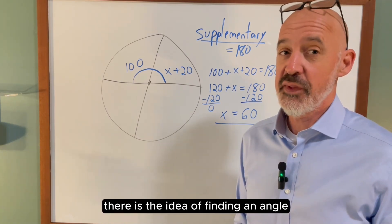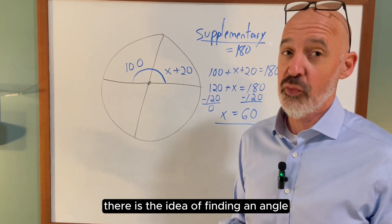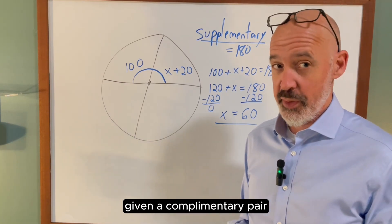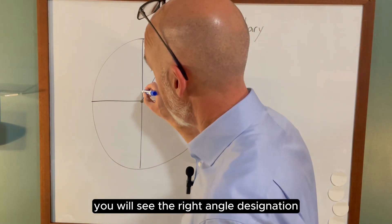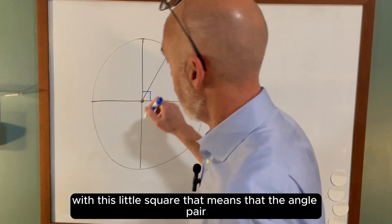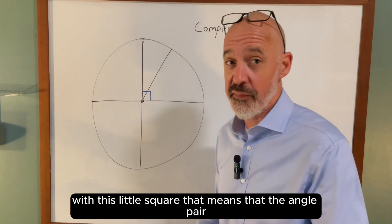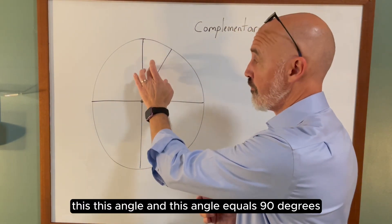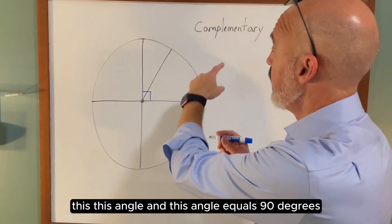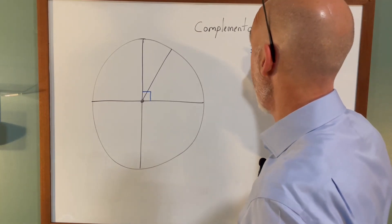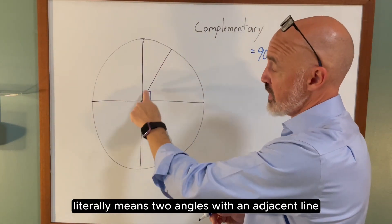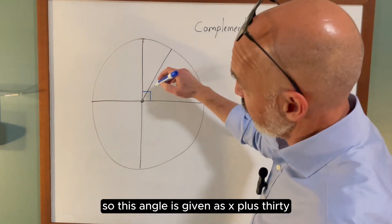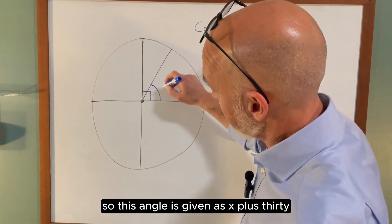Finally, there is the idea of finding an angle given a complementary pair. When given a complementary pair, you will see the right angle designation with this little square. That means that the angle pair, this angle and this angle, equals 90 degrees. A complementary pair literally means two angles with an adjacent line segment that equals 90 degrees.